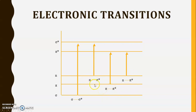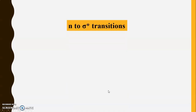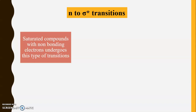Now we will start the discussion about the n to sigma star transition and the pi to pi star transition. Saturated compounds with non-bonding electrons undergo n to sigma star transitions. The non-bonding electrons are present on atoms like oxygen, nitrogen, and halogens. So saturated compounds consisting of nitrogen, oxygen, or halogen show the n to sigma star transition.